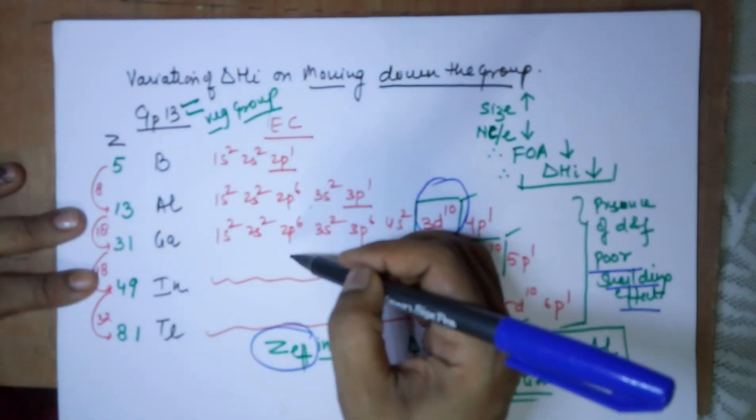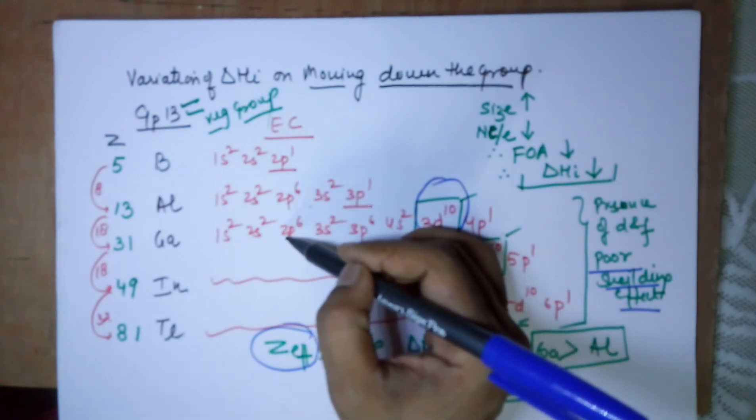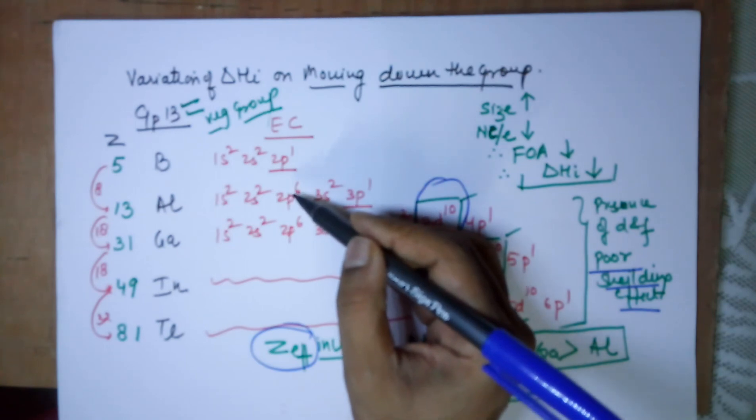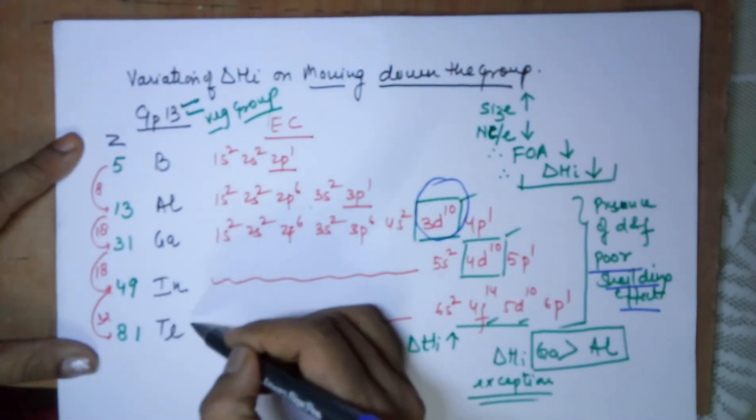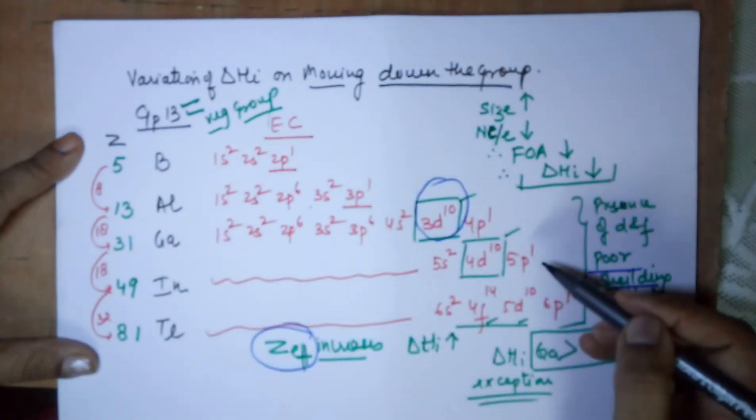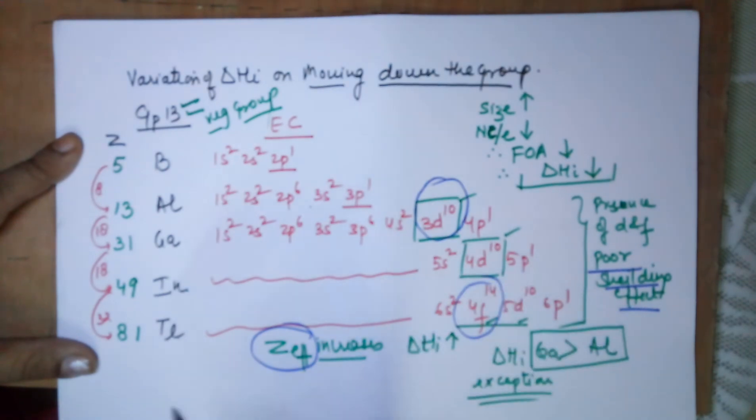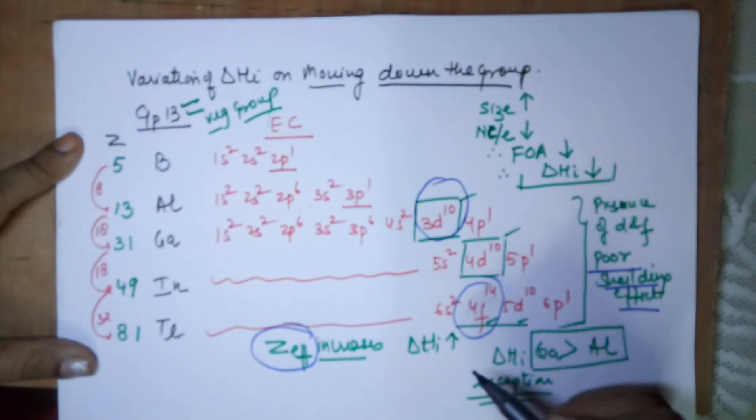This is the only specific case in the whole periodic table where you find the third member having a higher ionization energy than the second member, contrary to the normal rule. But as far as the last two members are concerned, always their atomic radii are almost the same because of the incorporation of the f-subshell which has the poorest shielding effect. So the nuclear charge, the effectivity of the nuclear charge, increases.